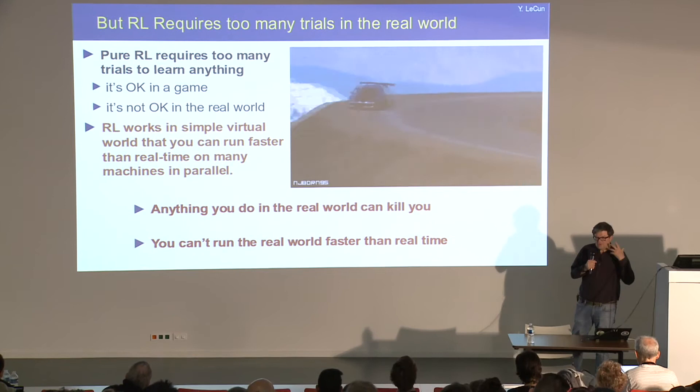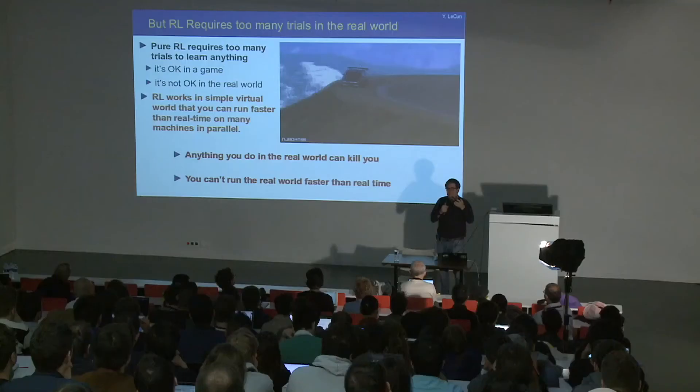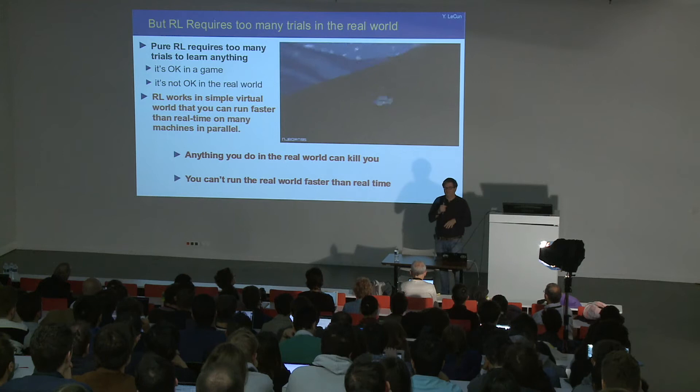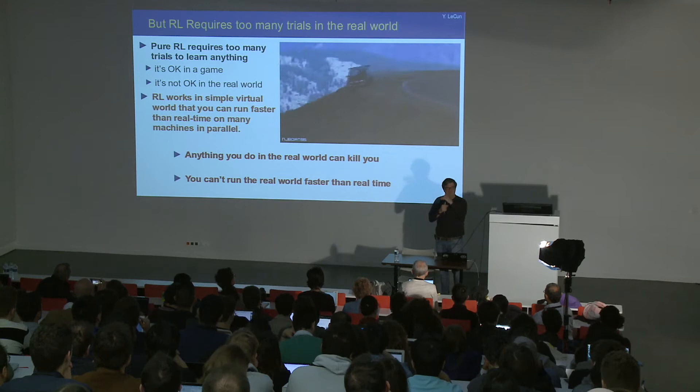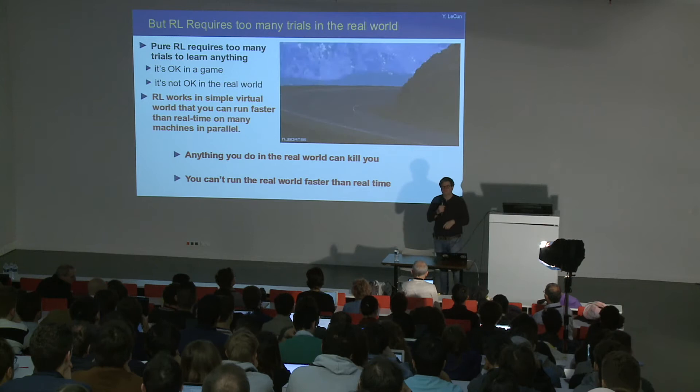The answer is that we have internal predictive models of the world. We can predict that if we drive near a cliff and turn the wheel to the right, the car will run off a cliff — we don't need to actually try it. Perhaps the answer for machines is to learn predictive models of the world that allow them to predict the consequences of their actions before they occur and plan ahead. The essence of intelligence may be the ability to predict.